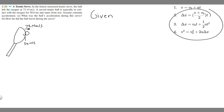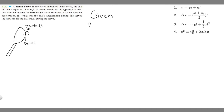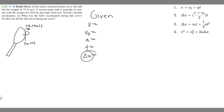We have the kinematic equations, and what we want to do is find each of these variables. Some of them we aren't given, so we'll set those equal to a question mark. The variables are: v (final velocity), v₀ (initial velocity), a (acceleration), t (time), and Δx (change in x position).